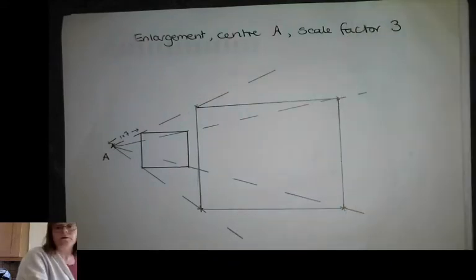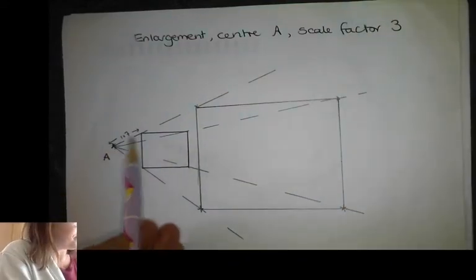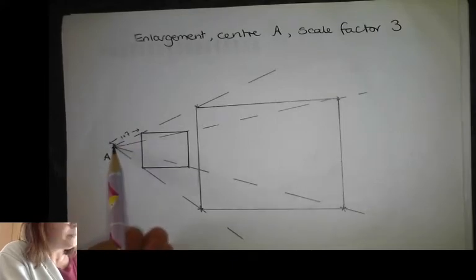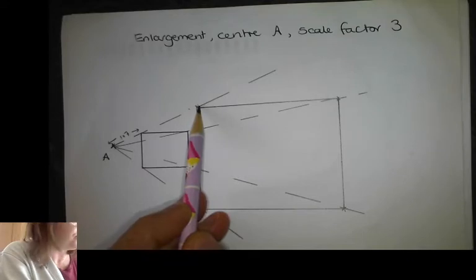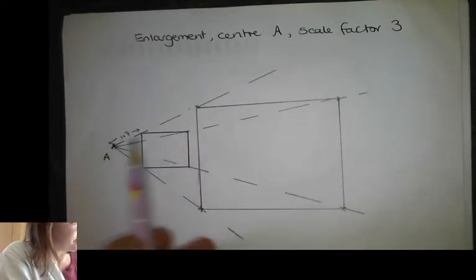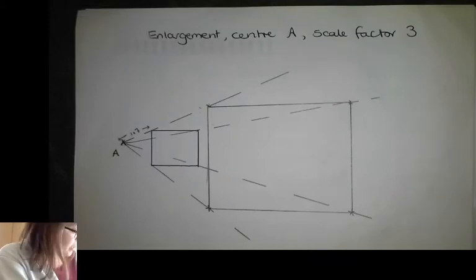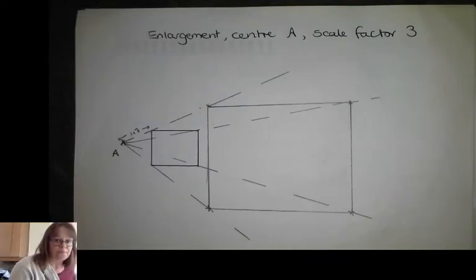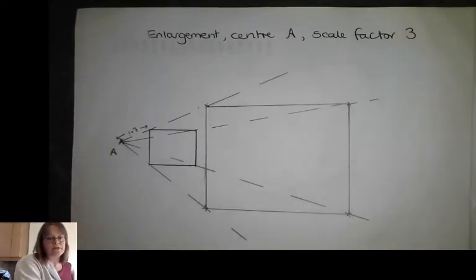Okay, not too bad. So what happened is I measured from the dot to the corner and then I tripled that measurement and measured again from the dot to create the new corner — did the same to every corner all the way around. We could move the dot around, so I'm just going to show you what happens if I change the dot. If the dot was in the middle then I'd obviously be measuring outwards and the shape would end up around the original — the pink one's the new one. I used a scale factor of two so I doubled all the distances.